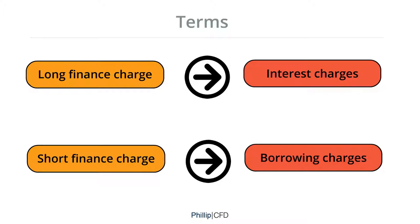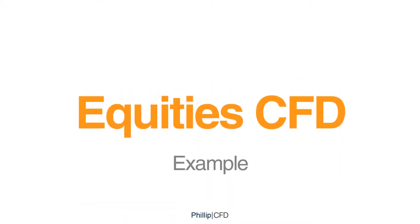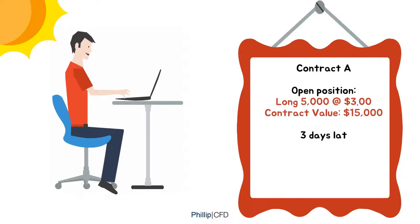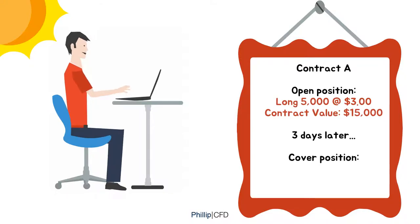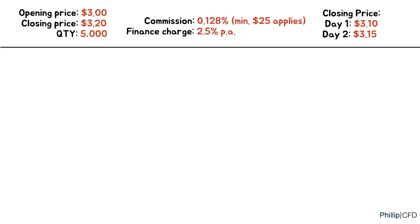I will be using three examples to illustrate how to calculate the charges for various CFDs. First is an example of an equity CFD position held for three days. Let's say you open a long position of Contract A, 5,000 contracts at $3, giving a contract value of $15,000. Three days later, you cover your position at $3.20, which is $16,000 in contract value. The assumptions are Commission Charge 0.128% with a minimum of $25, and Finance Charge at 2.5% per annum.